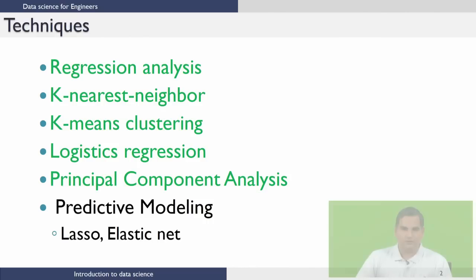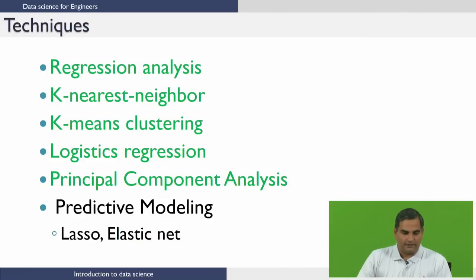Let me start with this laundry list of techniques that people usually see when they look at any curriculum for data science, or any website or book that talks about data science. I have done some colour coding: techniques you will see in this course are shown in green, and other techniques that are out there which we will not be teaching in this course but which would be part of a more advanced course. There are techniques such as regression analysis, k-nearest neighbour, k-means clustering, logistic regression, and principal component analysis — all of which you will see in this course.